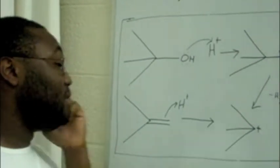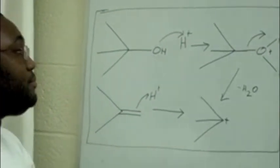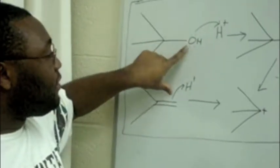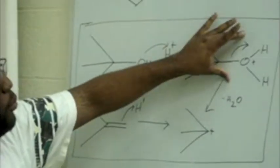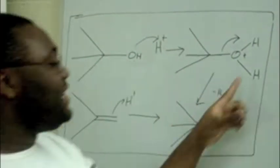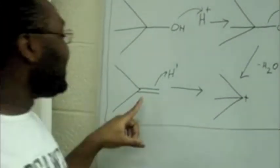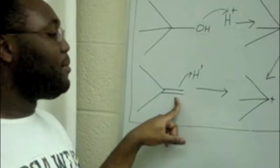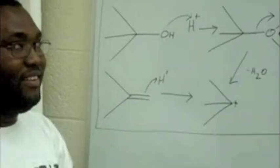My personal favorite reaction is the use of the alcohol to form the carbenium. The alcohol in the presence of acid forms water, which then leaves and forms a carbenium ion. The alkene in the presence of acid reacts — the double bond breaks and it forms a carbenium ion. Not as exciting as the water leaving, but so exciting.